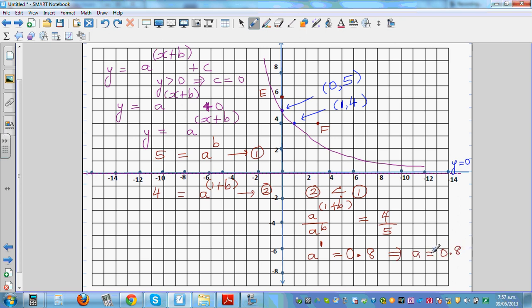And it does make sense because it's a decay curve. So now we can say your equation is y equals 0.8 raised to x plus b. Now we can put this value back. We can say 5, we can put y as 5, so 5 equals 0.8 raised to b.